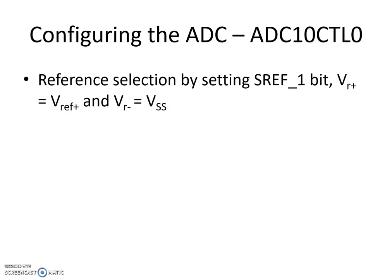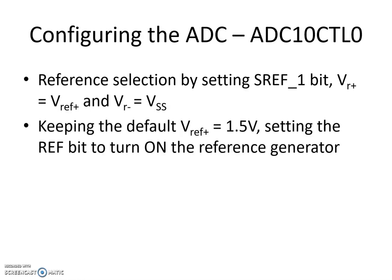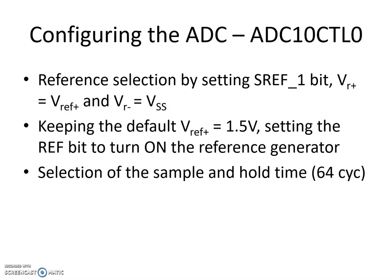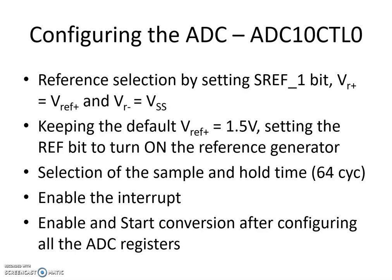The default VREF+ is always 1.5V, which is what we intend to use, so you simply set the REF bit to turn on the reference generator. Then you select the sample and hold time using the same register — we are selecting 64 cycles, which will become clear when we discuss ADC10 CTL1. You also enable the interrupt using the same register. These four steps can be combined into one register write, but enabling and starting the conversion must happen separately, after all ADC registers are configured.